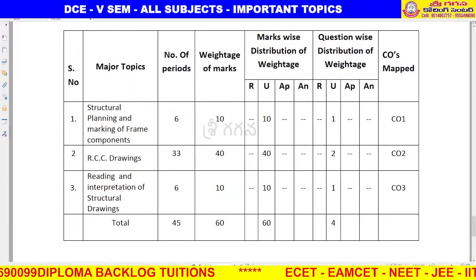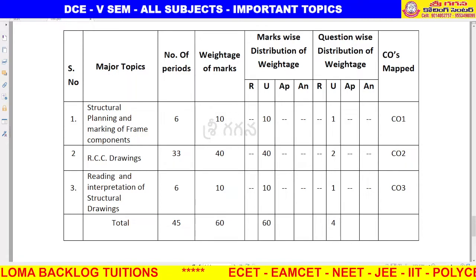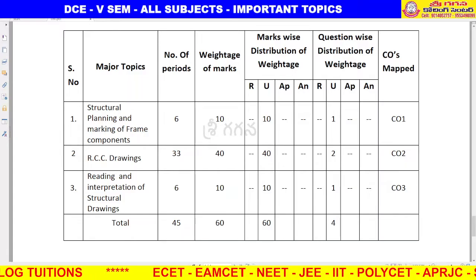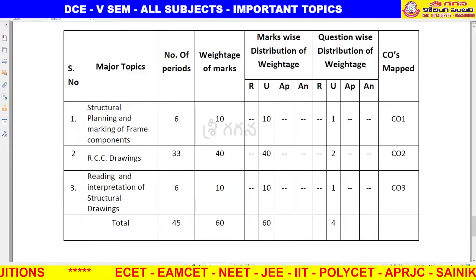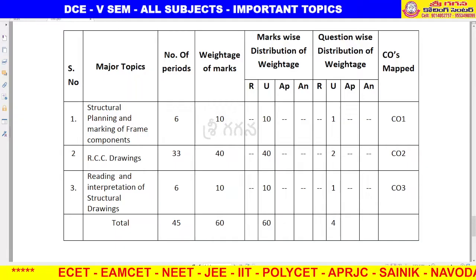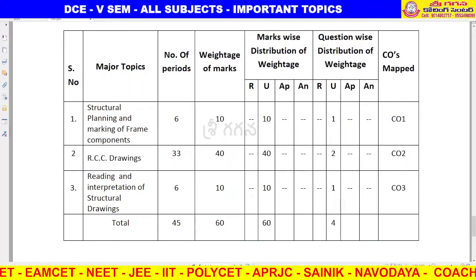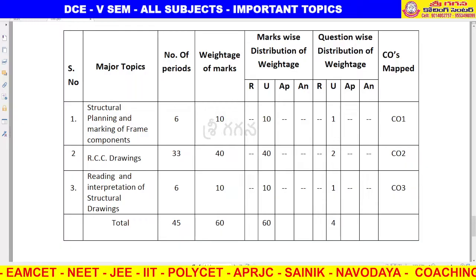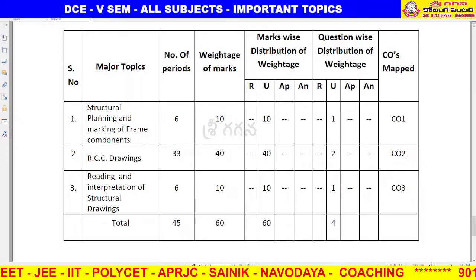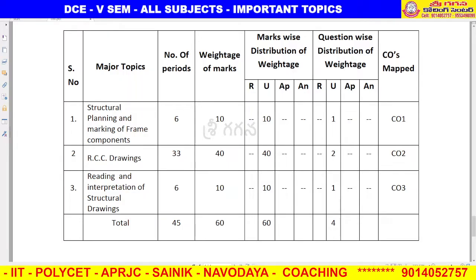If you have three subjects — C5.5, C5.4, and other problematic subjects — and if you cover the first, second, and third units, you will be fine. The exam is 80 marks plus 20 marks internal, which is the standard pattern. The third unit carries about half the marks, similar to a lab.